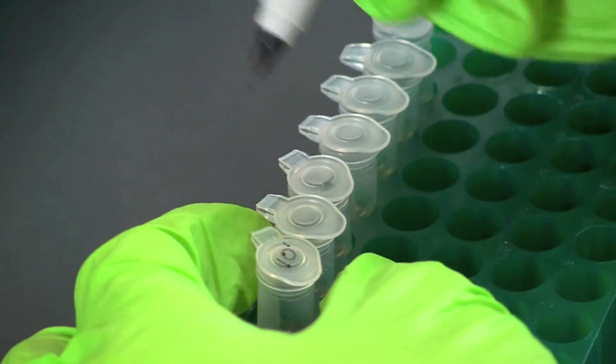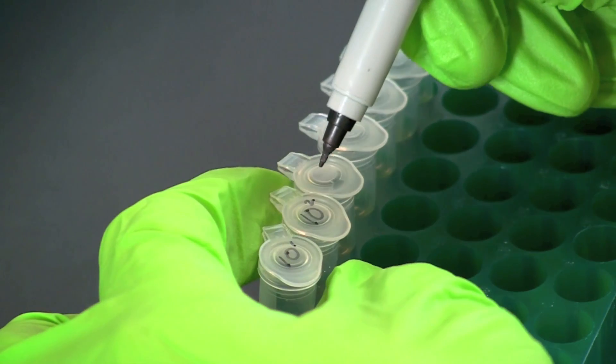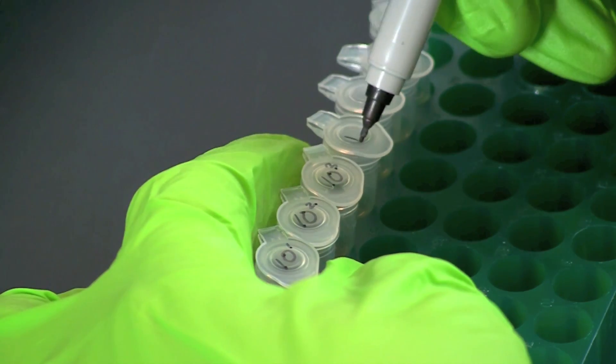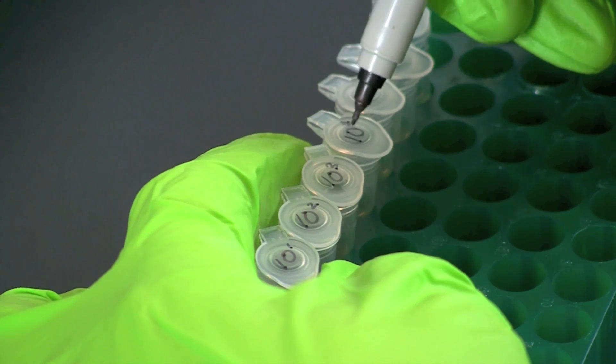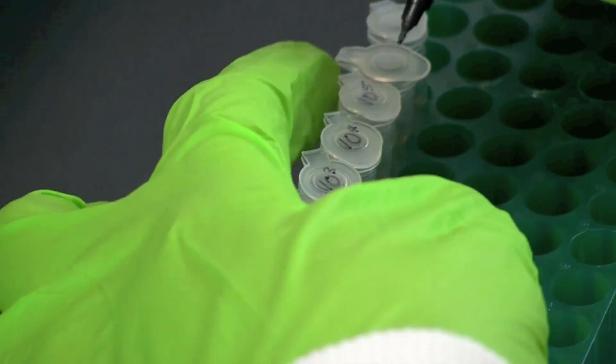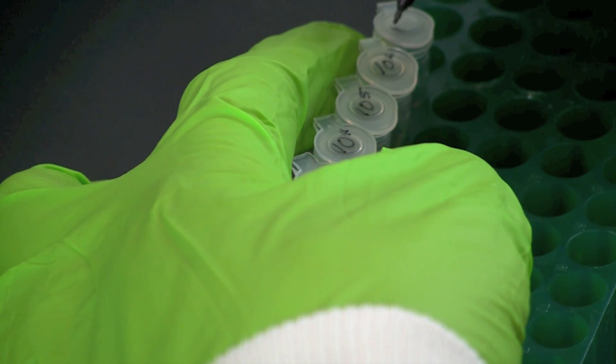Label 7 sterile microcentrifuge tubes with the dilution factors: 10 to the 1st, 10 to the 2nd, 10 to the 3rd, 10 to the 4th, 10 to the 5th, 10 to the 6th, and 10 to the 7th.